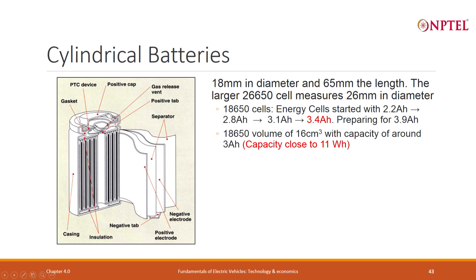The cells are designed by taking the electrode material and rolling it — rolling one layer after another: positive electrode, negative electrode, with a separator in between. There is a negative tab and a positive tab. There is a gas release vent in case something goes wrong. There is also a positive cap, PTC device, gasket, casing, and insulation. The 18650 most common cell is 3.4 AH, though 3.9 AH is also coming. The 18650 has a volume of 16 cm³ with a capacity of around 11 Wh.